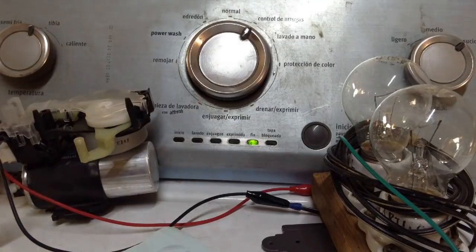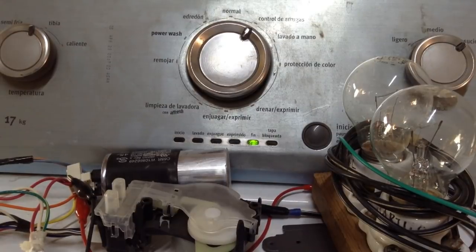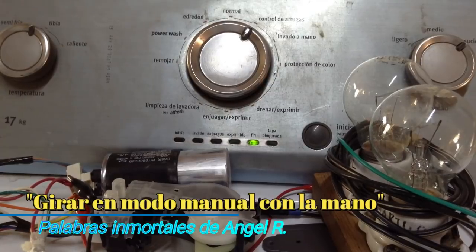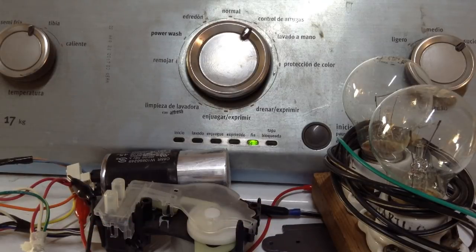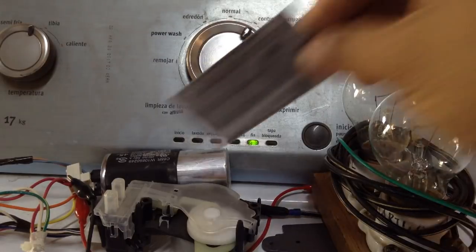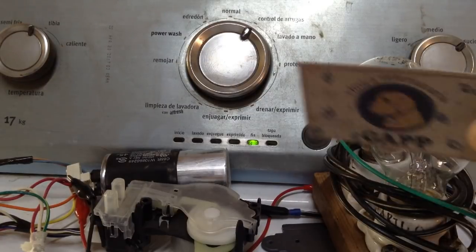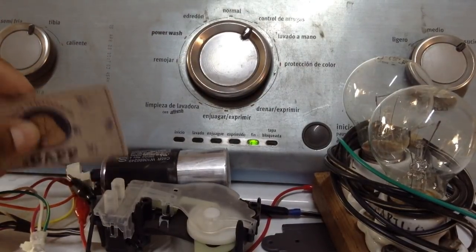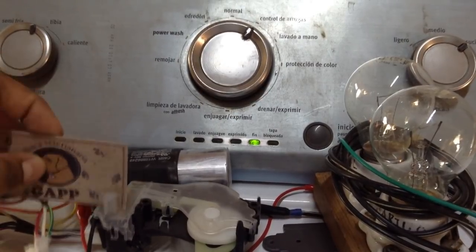Ya estando allí en ese modo vamos a abrir la tapa de nuestra lavadora y vamos a girar la canasta de forma manual. En esos momentos se enviarán pulsos eléctricos a la tarjeta electrónica por medio de mi actuador. En este caso no tengo la canasta aquí. El LED que ustedes ven allí donde dice fin debe avanzar de izquierda a derecha.